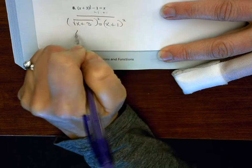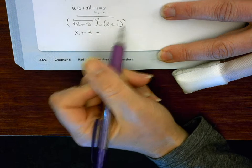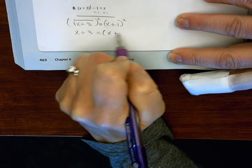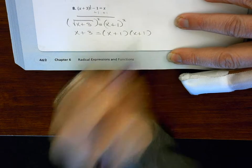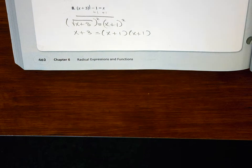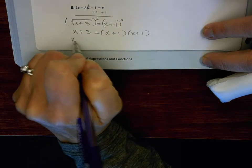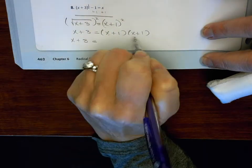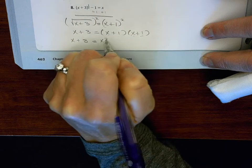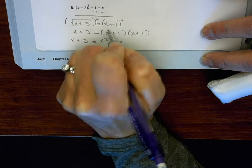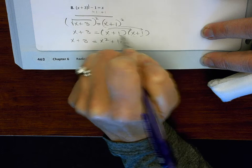And then that's just x plus 3. And then I have to write this twice so I can distribute. So then I have x plus 3, and distribute the x to both of these. So that would be x squared plus 1x.